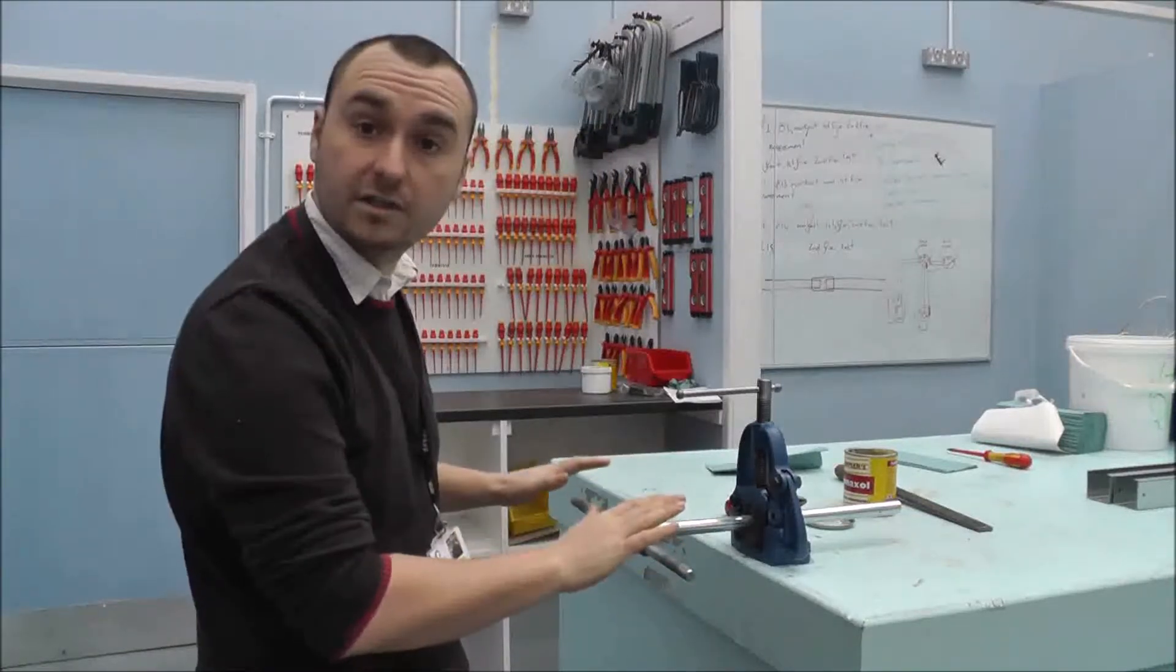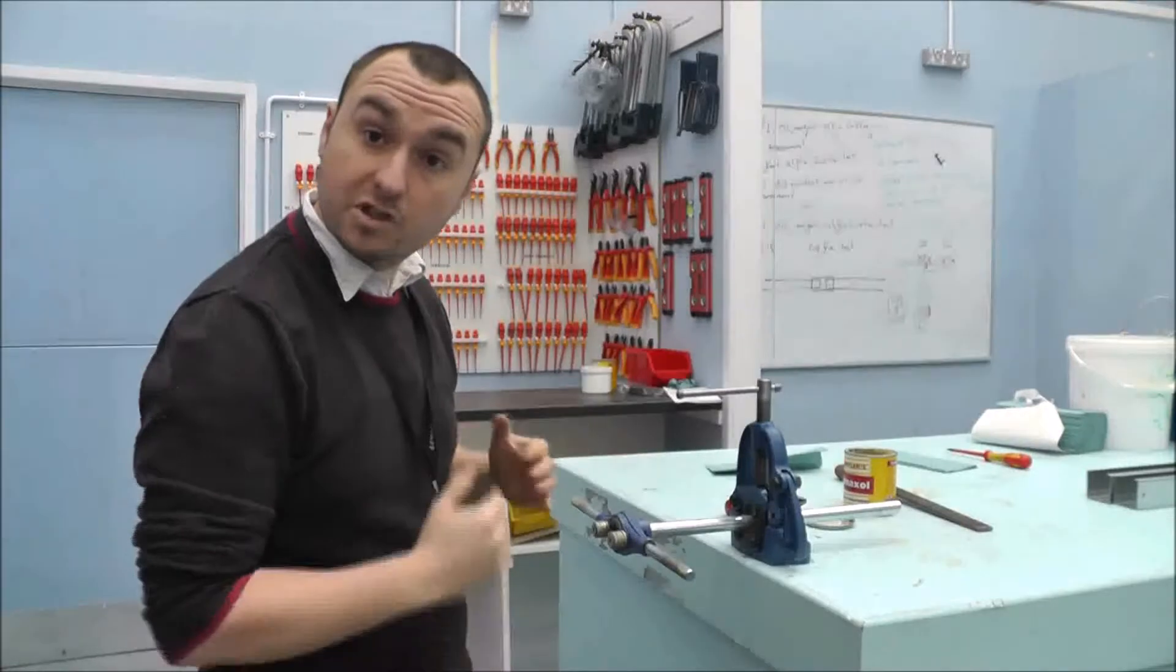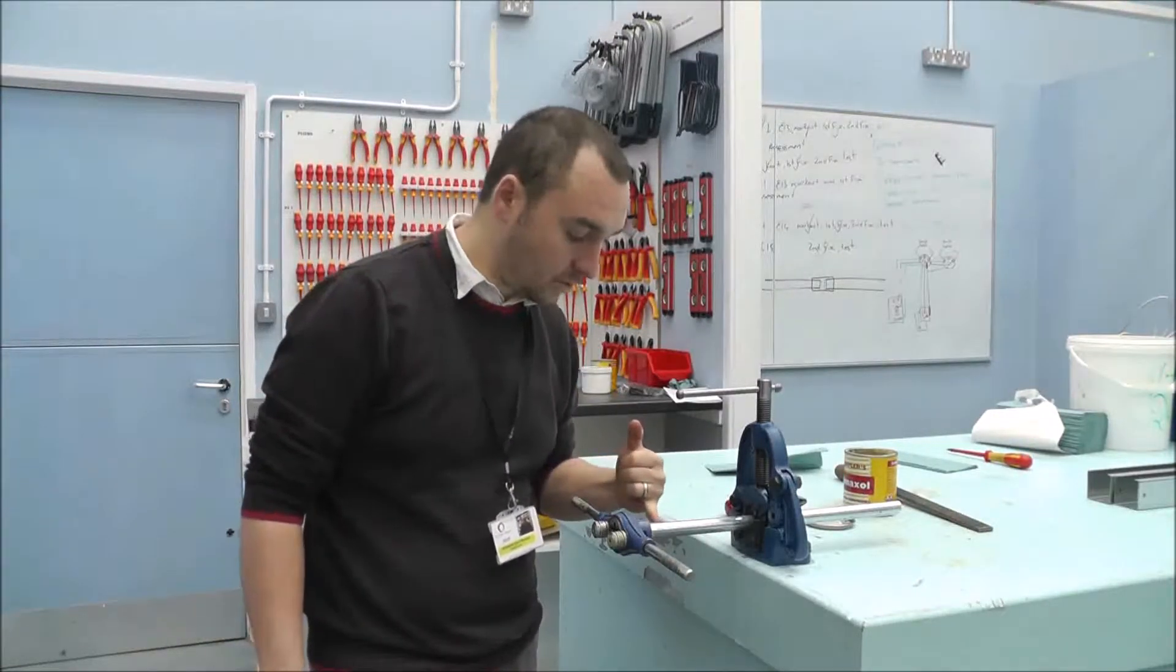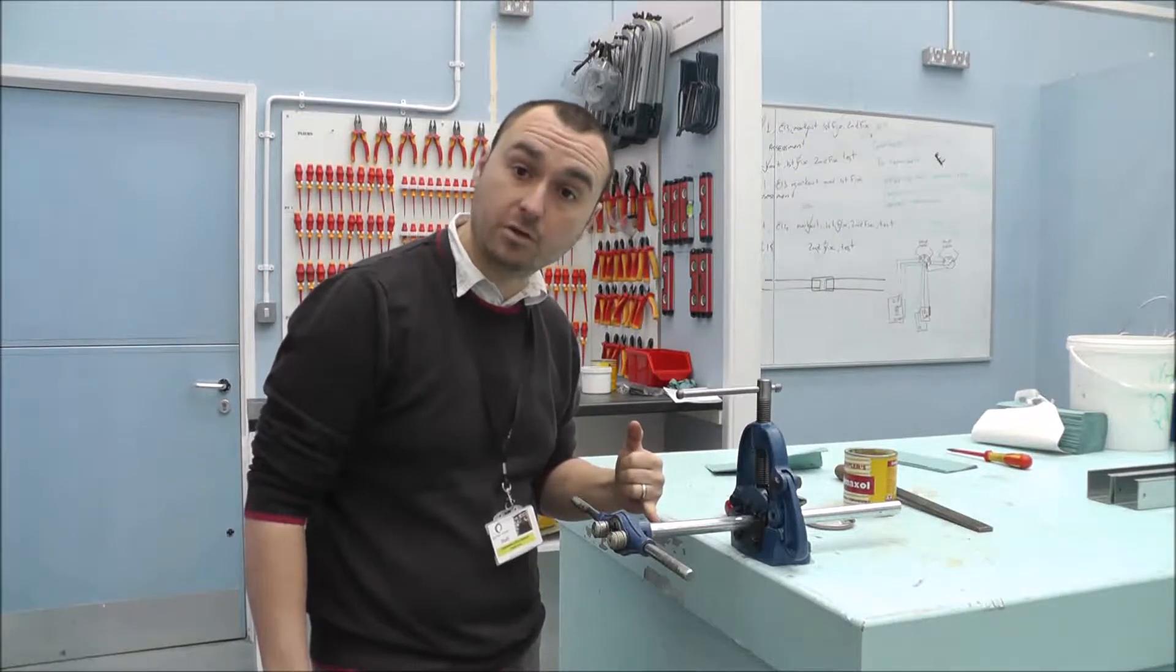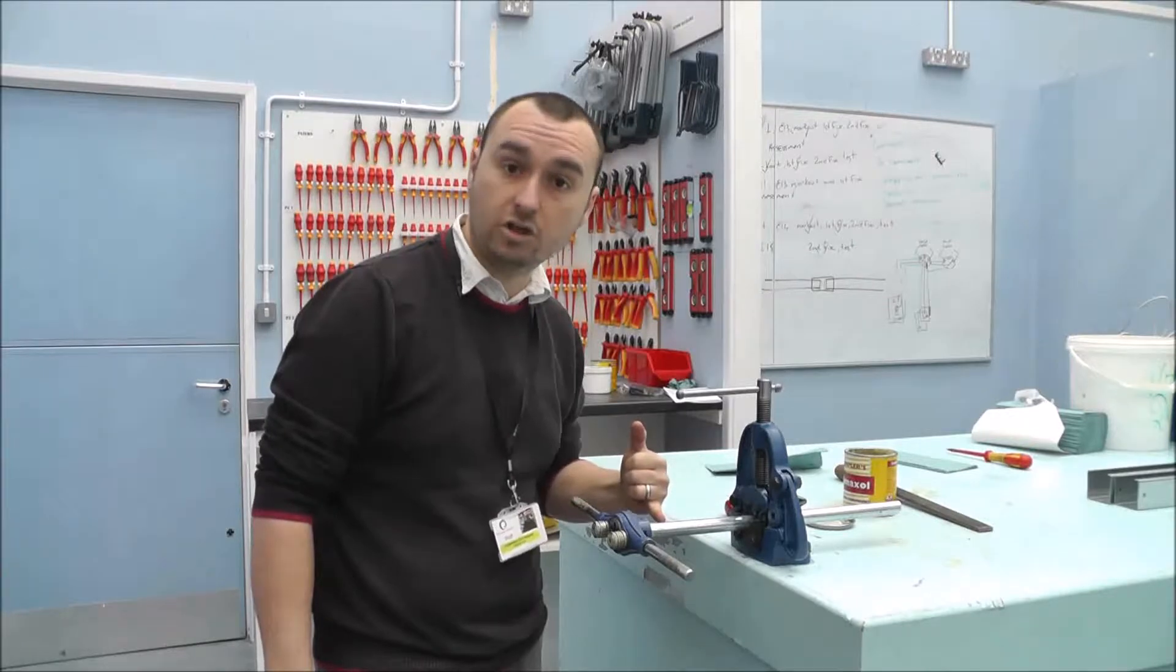There. You can just feel it starting to grip. Now if you wanted to measure a specific length of thread, you would measure from the end of the stock and die, then mark your measurement further up the conduit. As you're turning, as that reaches that point, you've got your required thread.